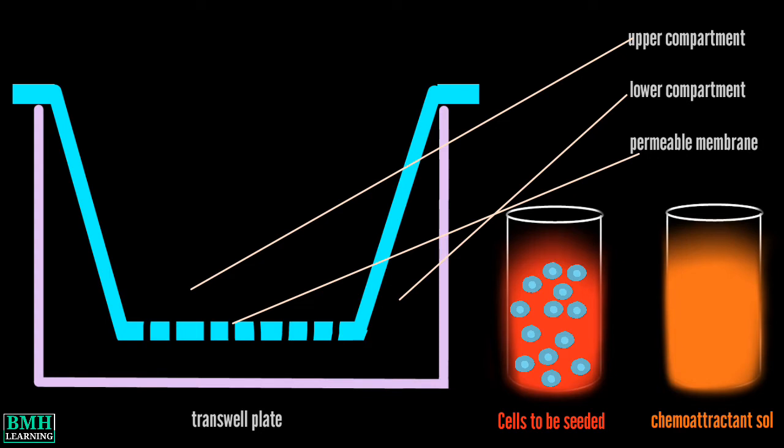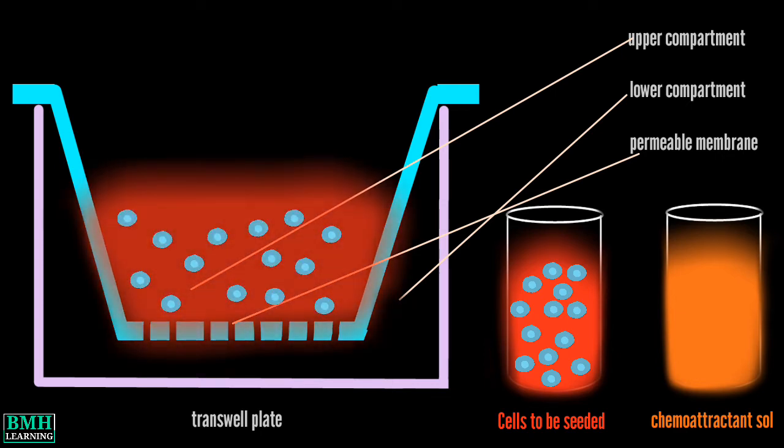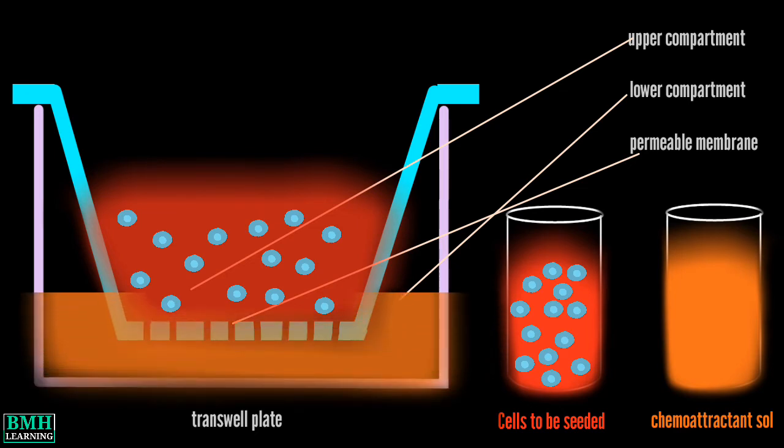Cells whose migration is to be studied are seeded into the top compartment and the chemoattractant solution is placed in the bottom compartment.